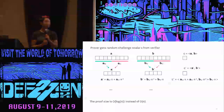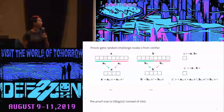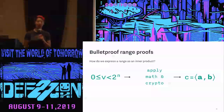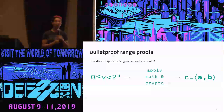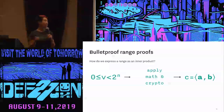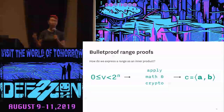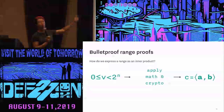You might be wondering why we care about proving that C equals the inner product of A and B. The reason is we can represent basically any statement we want as an inner product argument by applying math and cryptography to it. As an example, I'll walk you through how we can do this to a range statement. We start out with the statement that V is between zero and two to the N. We want to apply some math and cryptography to get it in the form of an inner product argument, where if and only if C equals the inner product of A and B, then with very high probability, V is in the range of zero to two to the N.